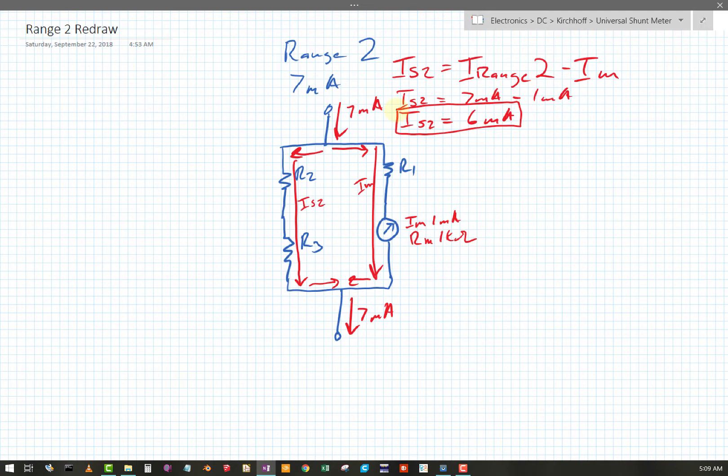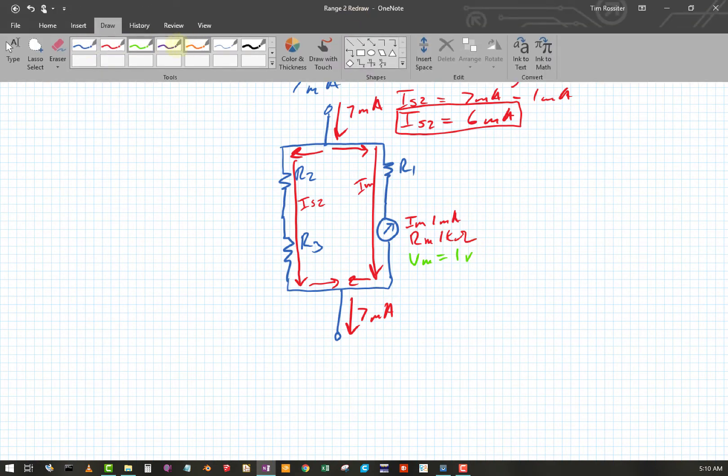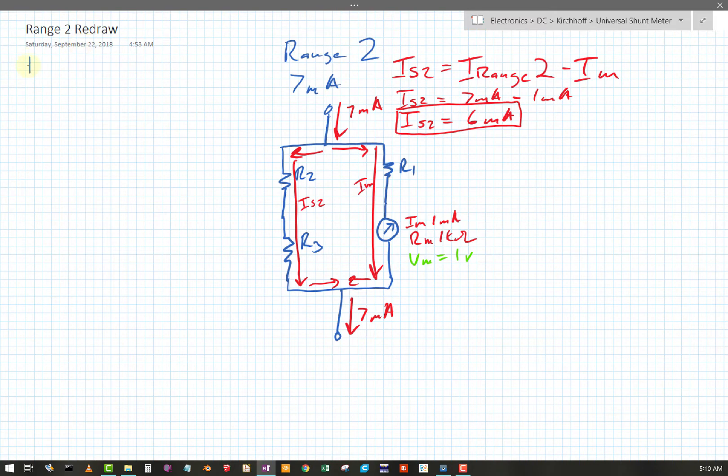All right, so let's look at some stuff. So we know that, we remember, in case we need it, that VM we found to be 1 volt. We remember the shunt total resistance was RST equals R1 plus R2 plus R3 and we did find that and it was 500 ohms. My memory is working.